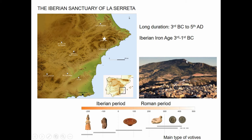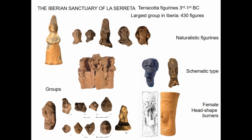Here we can look at the placement of the sanctuary on a hilltop, presiding over and controlling the surrounding territory. During the Iberian period at La Serreta, there is possibly the largest collection of votives with more than 430 figures — possibly more — because it was excavated and the collection was taken from the site in the early 20th century under poor excavation conditions. Nevertheless, it is one of the most important collections in terms of numbers.